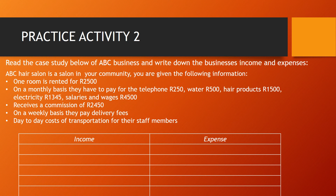For example, one room is rented for $2,500 — this is rent income, so it would go under income in the table. On a monthly basis, they have to pay for telephone, water, hair products, electricity, salaries, and wages — ask yourself: is the business getting money, or are they spending money? If they are getting money, it is income. If they are spending money, that is expenses. Apply this to all points in the case study. The answers will be reviewed in the next accounting concepts video.